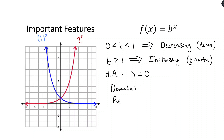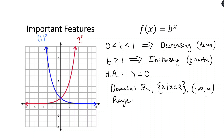Let's talk about domain and range. The domain of these functions is all real numbers. We can write that with a fancy ℝ, in set-builder notation as {x | x ∈ ℝ}, or in interval notation as (−∞, ∞). We can see this visually from the graph — every x value is represented. There are no restrictions on what we can plug in.